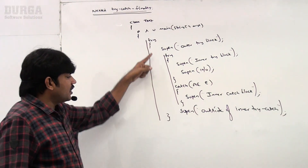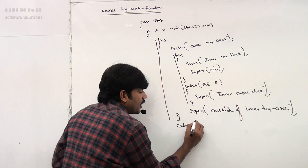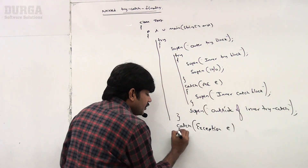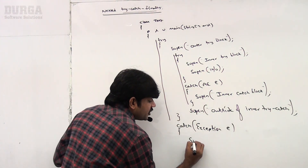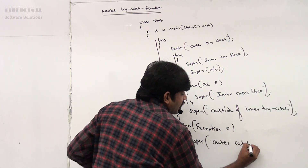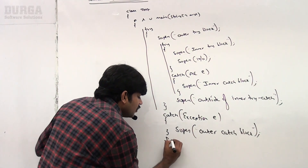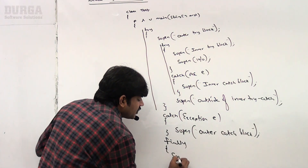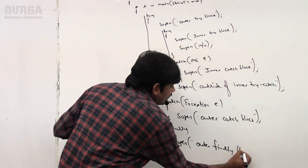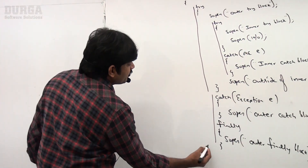That completes the outer try block. Now I am taking an outer catch block — catch(Exception e) — with System.out.println("outer catch block"). Then finally a finally block with System.out.println("outer finally block"). That's all the code. Now inside the try block I took try-catch, and there is an outer catch block and outer finally block. Can you please tell what output we are going to get?